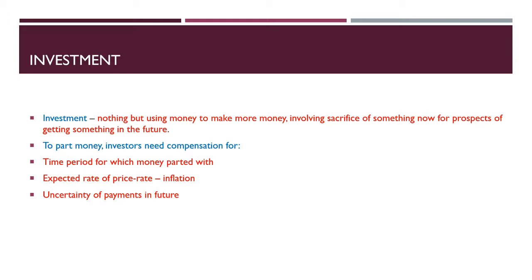So Investment — it can also be known as People Investment, or People Investment Planning, PIP. Investment is nothing but using money to make more money. It involves a sacrifice of something now for prospects of getting something in the future. You basically invest £1,000 in and you may get £10,000 out in the end. The stock market is probably the best way to explain that.